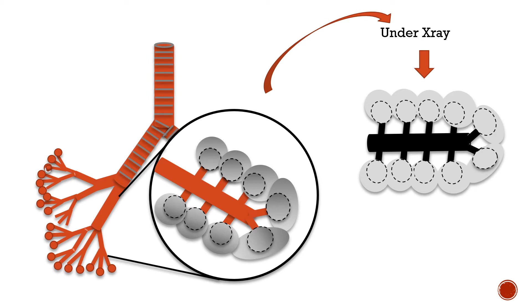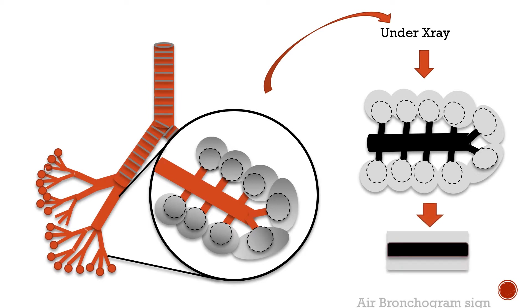On an x-ray, air appears black, so a normal lung mostly appears in shades of gray to black. In HMD, the respiratory tract and ducts contain air and appear black, while the alveoli and surrounding interstitium have hyaline membrane and appear white. Hence, a band of black is seen between the white areas, called the air bronchogram sign, which is peculiar when the alveoli are consolidating.